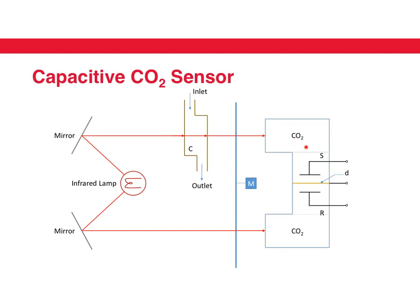This chamber receives less infrared light compared to the other, so the pressure here is lower. The diaphragm moves, the differential capacitor responds, and we can sense the change in capacitance.